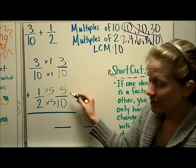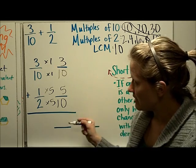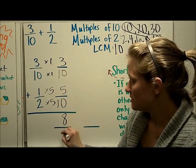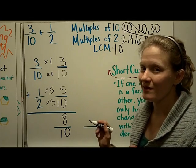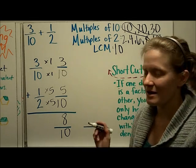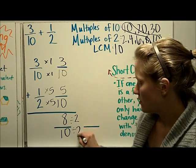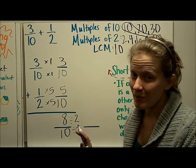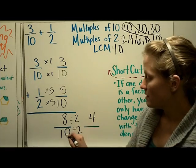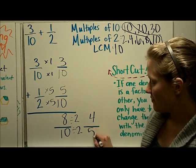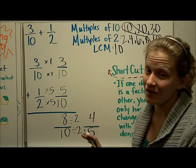Now I can add the fractions with common denominators. Three-tenths plus five-tenths is eight-tenths. I notice both numbers are even, which reminds me to simplify. I'll divide both by two since they're both even and two is a common factor. Eight divided by two is four, ten divided by two is five. That fraction is simplified because four and five don't have any common factors other than one.